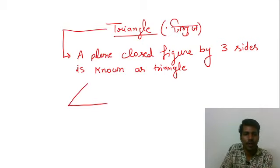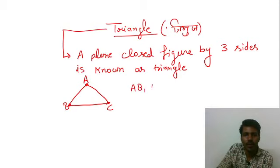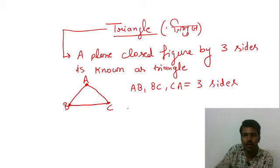Example, this A, B, C. It has three sides AB, BC, and CA. All these three sides, teen bhuja hain, okay?